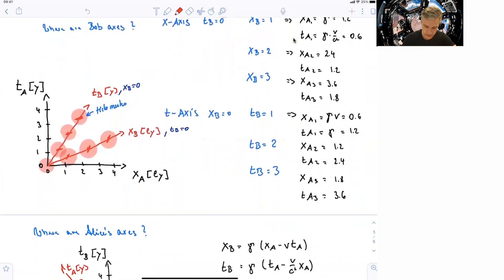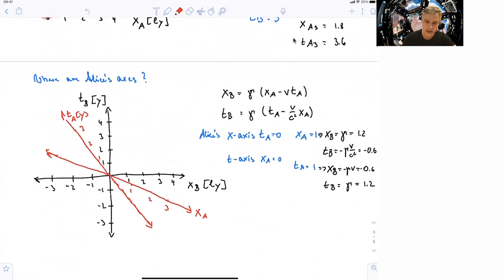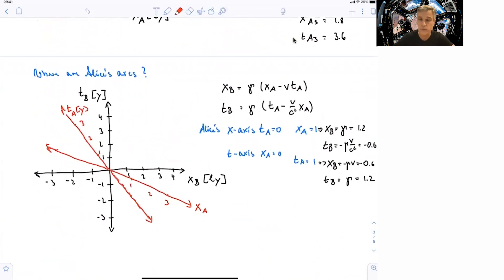All right, so the second question, then, is, where is Alice's axis in Bob's space-time diagram? So the procedure is very similar as before. We draw Alice's axis, sorry, we draw Bob's axis, and we find Alice's axis x-axis by setting ta equal 0. And then we find a number of points and connect those. And the time axis is found by setting xa equal 0, and finding then points for various values of time. And you see here,